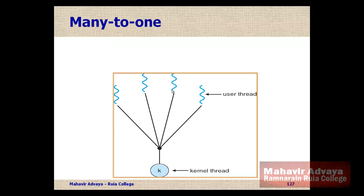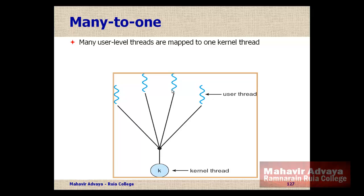In the many-to-one model, as you see in the diagram, many user threads are mapped to a single kernel thread. In this model, if any one user thread makes a blocking call or is blocked for some reason, the entire operation is blocked. So the kernel thread also gets blocked because of that one user thread — one kernel thread is responsible for handling the operations of many user threads.